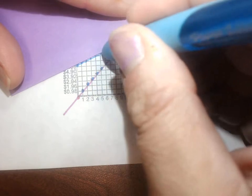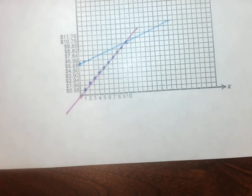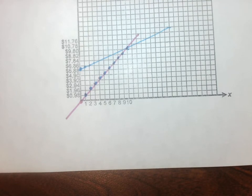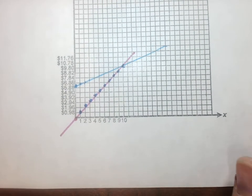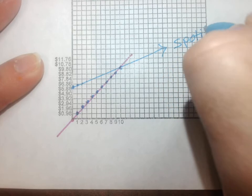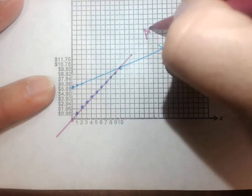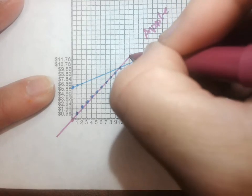I'm going to extend my line. So it looks like they do have a point of intersection there, which is really cool. And to kind of make some sense of this, the blue one was my Spotify and the pink one was Apple.